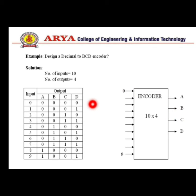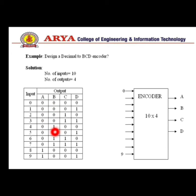Next is the decimal-to-BCD encoder. Decimal values are 0 to 9, so the number of inputs is 10. Since BCD is represented in 4 bits, the number of outputs is 4. We put values from 0 to 9 in the truth table, and outputs are the 4 BCD bits. Similar to the octal-to-binary encoder: A equals 1 when inputs 8 or 9 are 1; B equals 1 when inputs 4, 5, 6, or 7 are 1; C equals 1 when inputs 2, 3, 6, or 7 are 1; D equals 1 when inputs 1, 3, 5, 7, or 9 are 1.